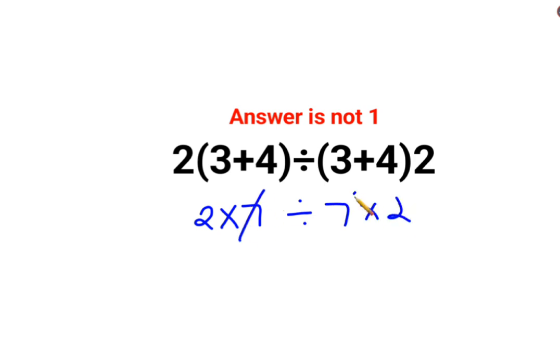So this and this gets cancelled, this and this gets cancelled, answer is one. Or even better, people thought this is 14 divided by 14, answer is one. No, that is not how this works.